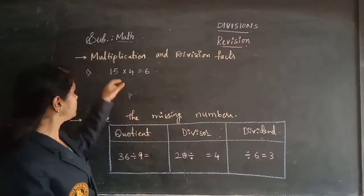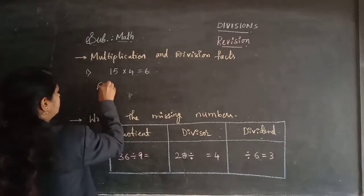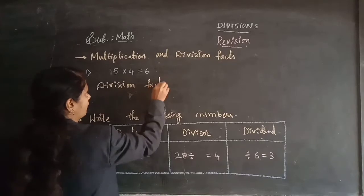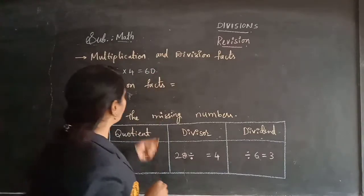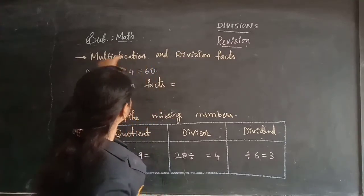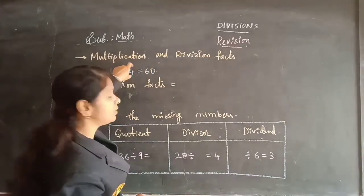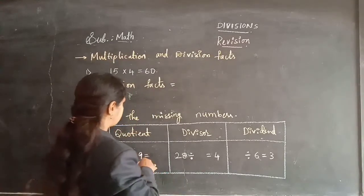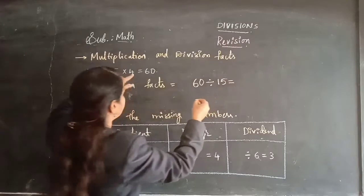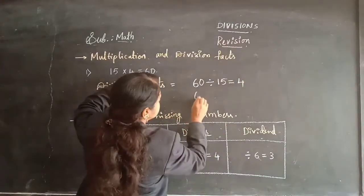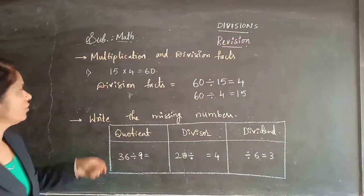Let's see the next bit — multiplication and division facts. The given statement is a multiplication fact. By using this you need to write its division facts. For example, if 5×15=60: whatever the product number, if you divide it by the first number you get the second number as an answer. And if you divide by the second number, you get the first number as an answer. So 60 divided by 5 gives 15, and 60 divided by 15 gives 5. These are the division facts of the given multiplication sentence.